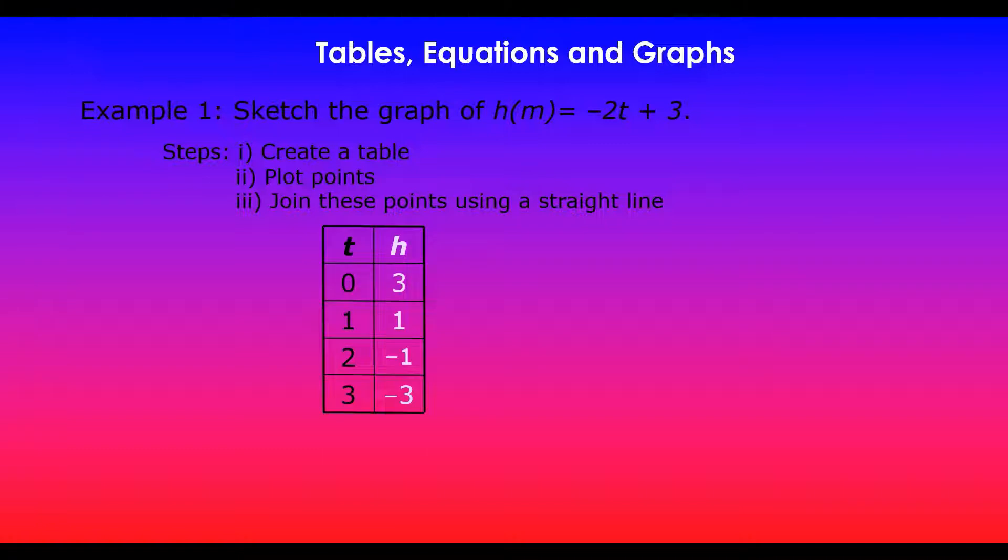So the table will look something like this. We've got t values, so pre-select t values - in this case I've used 0, 1, 2, and 3. And then the corresponding h values will be obtained by replacing the t values in the function. You can use your calculators to record the answers. So the first t value is 0, so you go negative 2 times 0 is 0, plus 3 is 3.